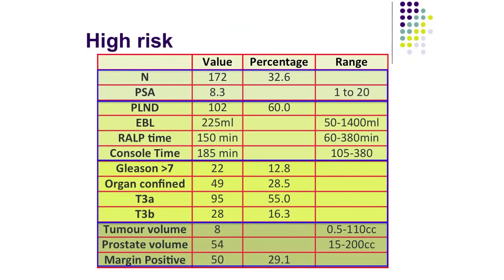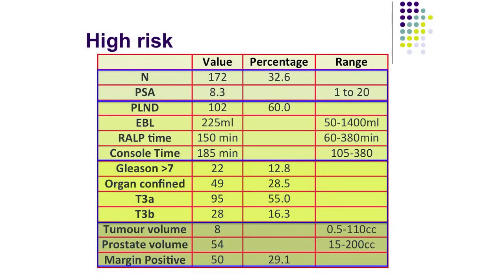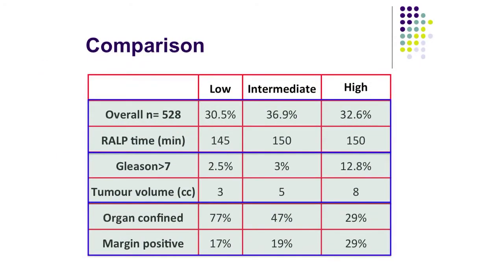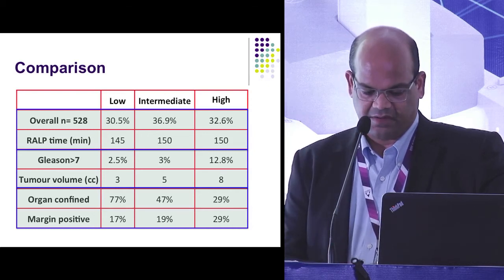For high-risk disease, around a third of patients again showed no major operative difference, but the number of patients who had PLND was 60 percent in the high-risk cohort. T3A and T3B combined: overall 70 percent of patients had extracapsular disease or lymph node positive disease, while around a third had organ-confined, curable disease. To reiterate: around a third of high-risk prostate cancer patients have organ-confined disease. Tumor volume increases to 8cc, margin positive rate is around 30 percent, and RALP time was not much different.